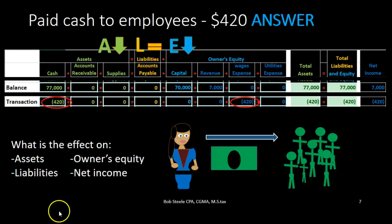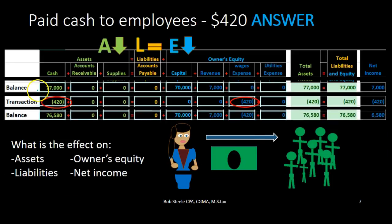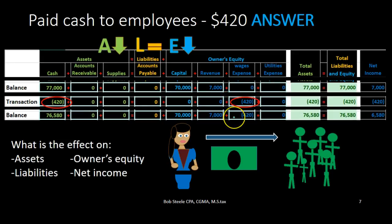Looking at the balances, we subtract across: $77,000 minus $420 brings us to $76,580 in assets. Liabilities remain at zero. Capital stays at $70,000. Revenue remains at $7,000. Wages expense is now negative $420 — expenses are negative because, as a component of owner's equity, they always bring down equity and net income. The ending balance is in balance, with total assets at $76,580.